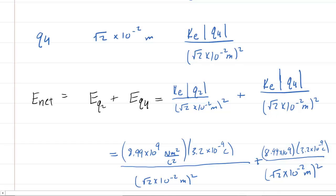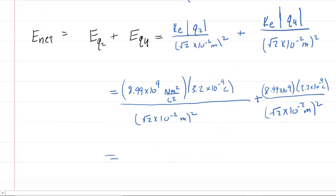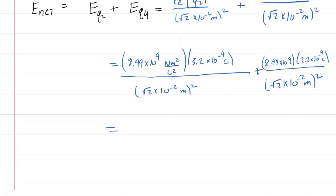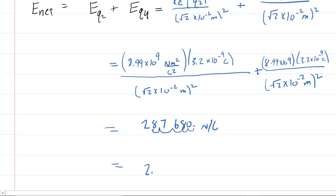So now the moment of truth, pick up your calculator and type this in very carefully. And when you do that, you should get about 287680 newtons per coulomb. And if you want to get that in scientific notation, let's say your decimal point is right here. So 1, 2, 3, 4, 5. So it's going to be 2.88 times 10 to the power of 5 newtons per coulomb. That is the correct answer for the magnitude of the net electric field at the center of the square.